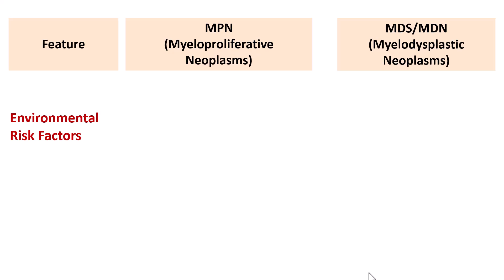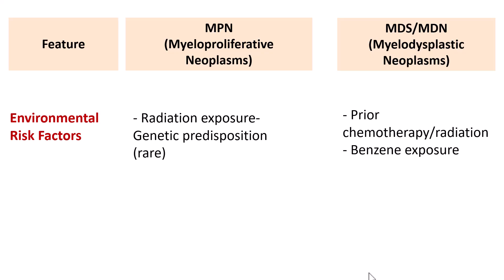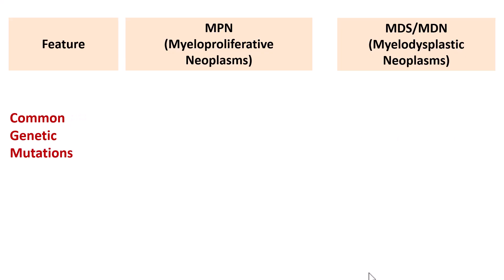Risk factors for Myeloproliferative Neoplasms include radiation exposure or genetic predisposition, which is quite rare. Whereas in Myelodysplastic Syndrome, there is often a prior history of chemotherapy, radiation, and/or benzene exposure. These are the important risk factors distinguishing these two neoplasms.